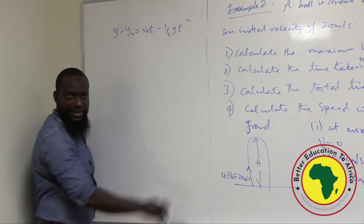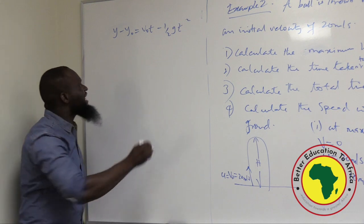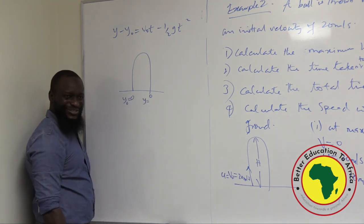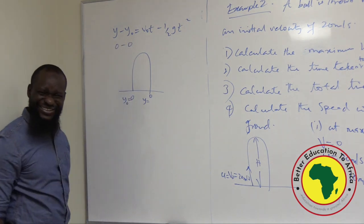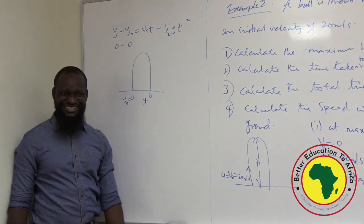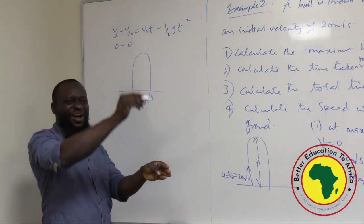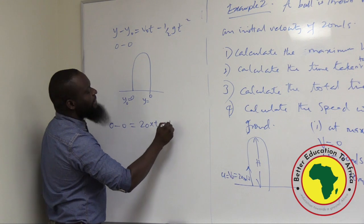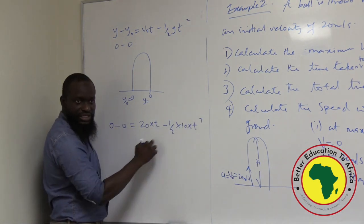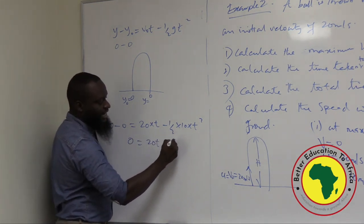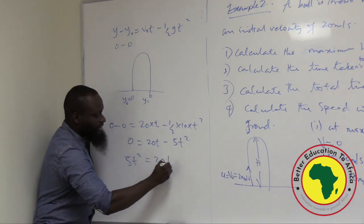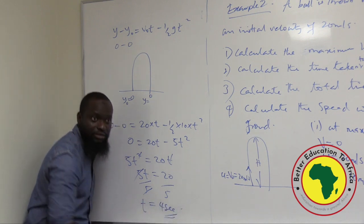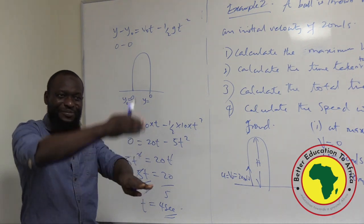For the velocity at the catch point: V squared equals V-naught squared minus 2g(Y minus Y-naught) gives V squared equals 400 minus 100 equals 300, so V equals the square root of 300. You get a positive and a negative answer — positive means the ball is on the way up, negative means it's on the way down. So 4 seconds is the time taken to start from zero, go up, and come back to zero.